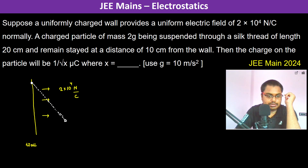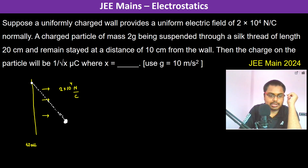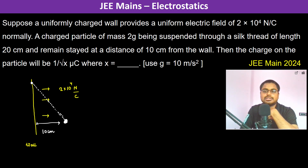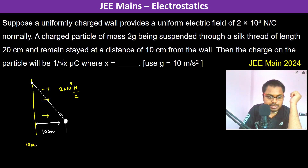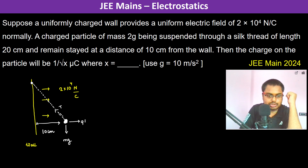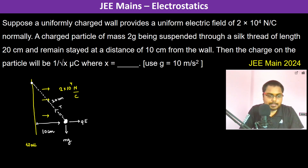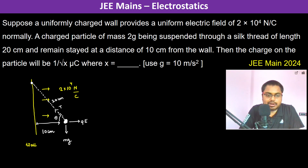The distance from the wall is 10 centimeter and the thread length is 20 centimeter. The forces acting on the particle are mg (gravity), T (tension in the thread), and the electrostatic force qE. From the geometry, cos θ = 10/20 = 1/2, so θ = 60 degrees.